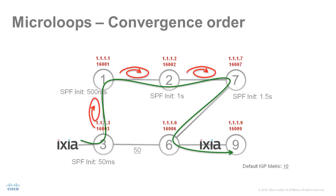In the demo, we will induce the worst-case convergence order by configuring different SPF backoff delays on the different nodes. This way the convergence order is first node 3, then node 1, then node 2, and then finally node 7. To illustrate the behavior, we will send traffic at a rate of 1000 packets per second from node 3 to node 9 using a traffic generator.